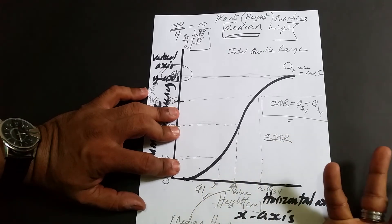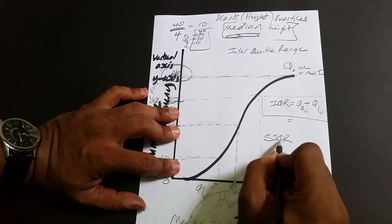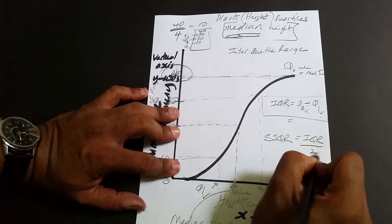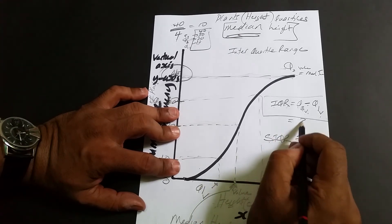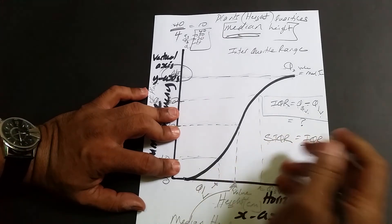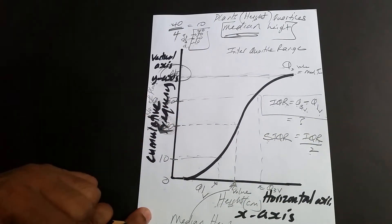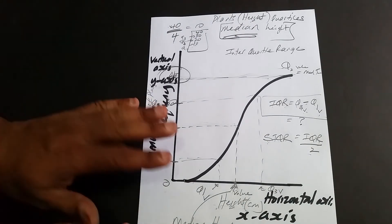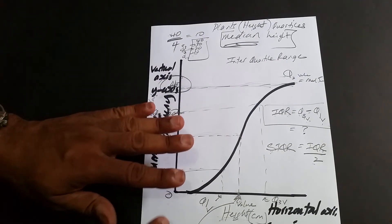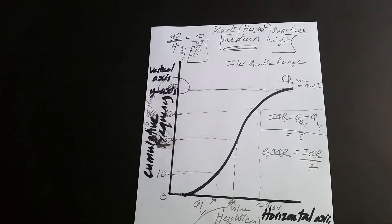The semi-interquartile range is simply the interquartile range divided by two — just like a semicircle is half a circle. So whatever interquartile range value you get, divide it by two to get the semi-interquartile range.